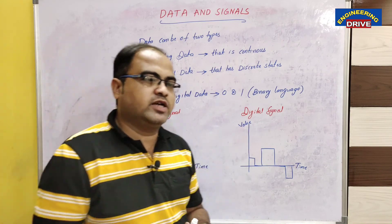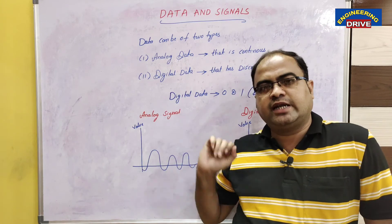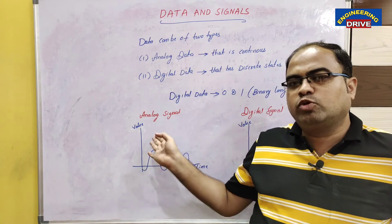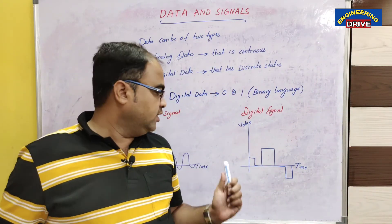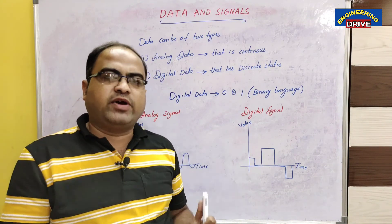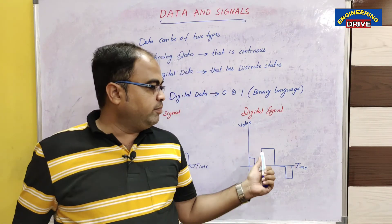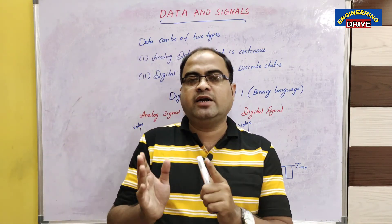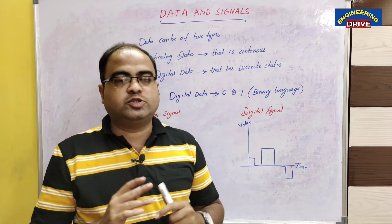Theoretically, what is the difference between analog signal and digital signal? Analog signal will have an infinite set of values — we don't know up to what extent the signal may reach, how many values it may have. The intensity of analog signal will be infinite. Whereas the intensity of digital signal is finite — it makes use of only two values: 0 and 1. These are the two values our digital signal makes use of.